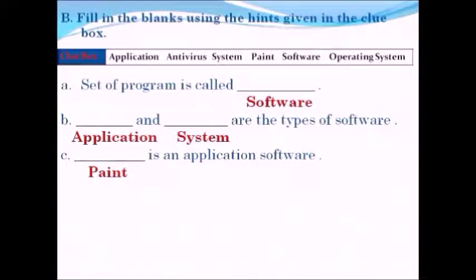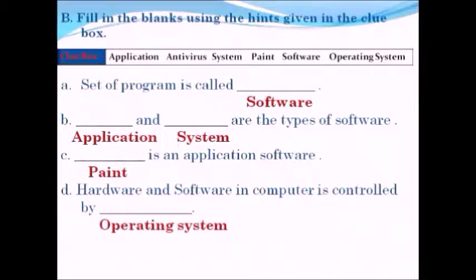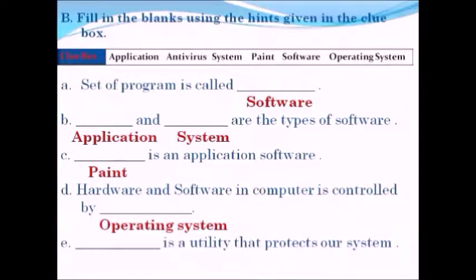Hardware and software in the computer are controlled by the operating system. Next blank: antivirus is a utility that protects our system.